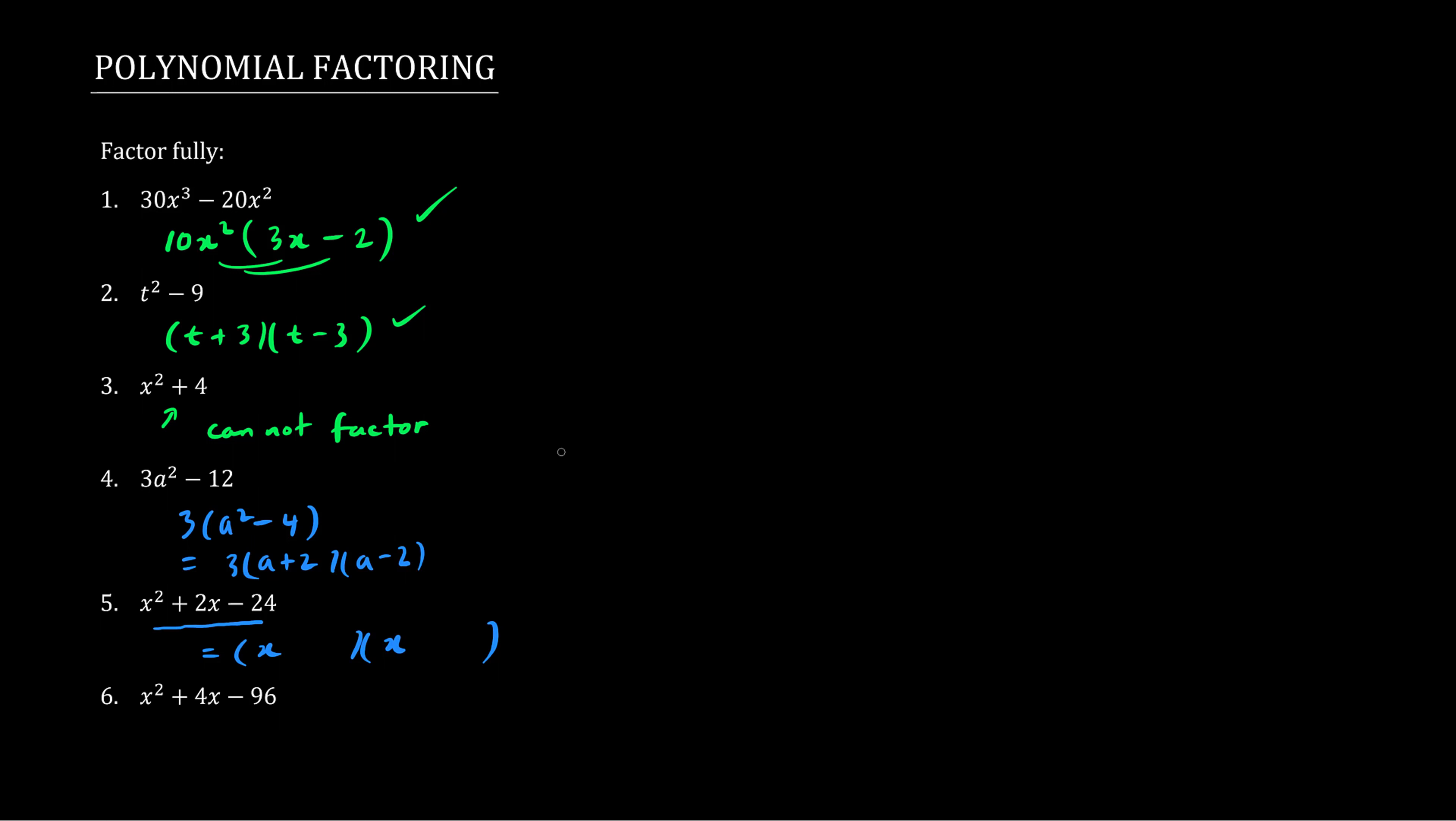We could try 1 and 24, that's quite far off. 2 and 12, 3 times 8. We can try 4 times 6. And the challenge is to find two numbers that multiply to be 24 but add to be 2. And we might have it here. Let's try 4 and 6.